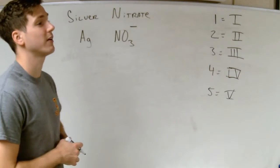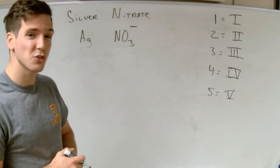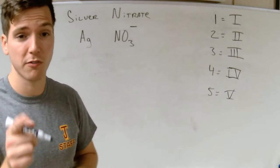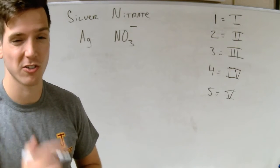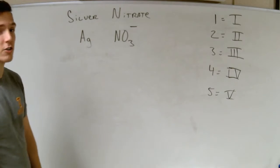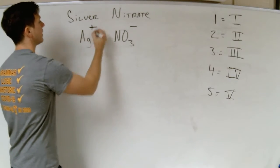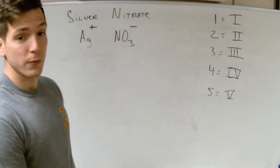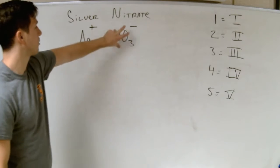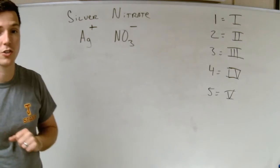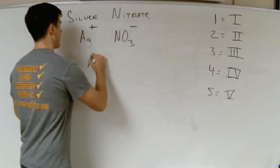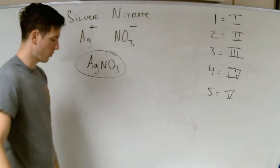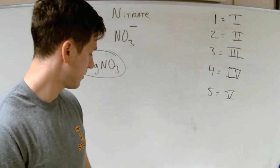I go to the periodic table and look for silver. I notice it's in the transition metal block, but there's no Roman numeral. Remember, silver is one of those with a fixed charge — silver and zinc. Zinc has a plus 2 fixed charge; silver has a plus 1 fixed charge. So we have minus 1 on the nitrate and plus 1 on the silver — they cancel out already, so no need to balance. The compound is just AgNO₃.